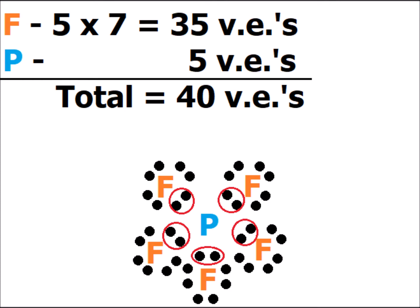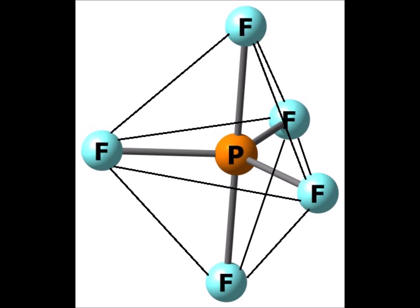Around the central phosphorus atom, we have 5 electron bonding pairs, which gives us 5 electron domains for phosphorus pentafluoride, shown surrounded by the red circle. The optimal way of reducing electron-electron repulsion among these electron domains when we have 5 domains is the trigonal bipyramid structure shown in the figure.